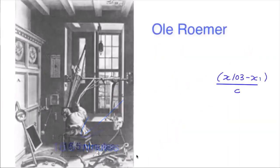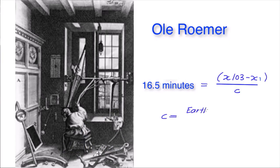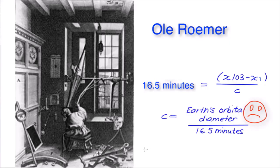It was Roemer who collected the numbers together, but he didn't have an accurate orbital diameter of Earth. And he came up with a speed of light of 2 times 10 to the eighth meters per second. That's 2 with 8 zeros after it, or 200 million meters per second.